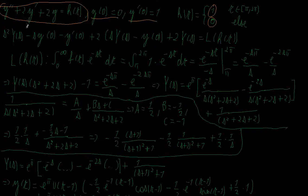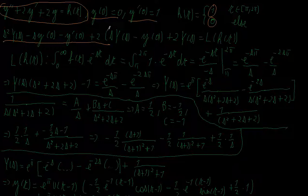I take the Laplace transform of both sides, so I get s² · Y(s) − s · y(0) − y'(0) + 2(s · Y(s) − y(0)) + 2 · Y(s) = the Laplace transform of h(t).